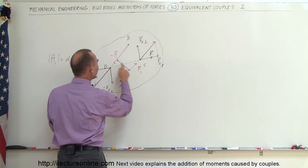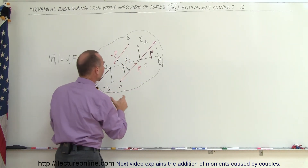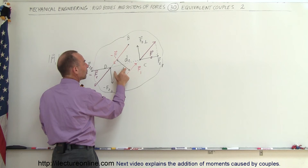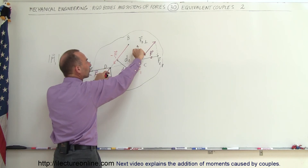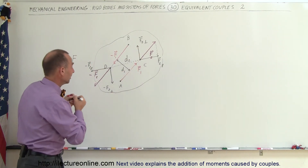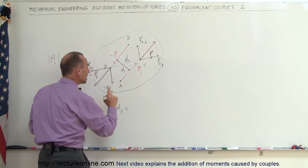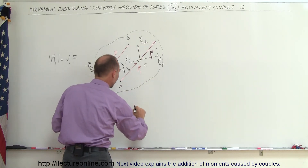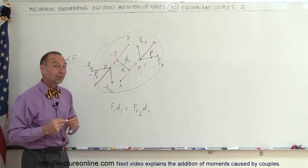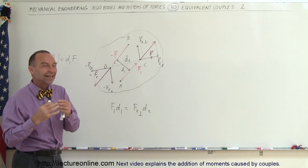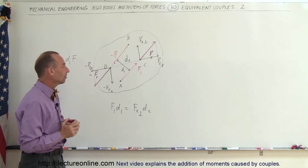Also notice that the distance between those two points is now larger — this is the distance d2. It turns out that the amount by which d1 grew to d2 is compensated for by the fact that the magnitude of the perpendicular components are now smaller, in such a way — and this is the key — that F1 times d1 is going to equal the perpendicular component F2-perpendicular times d2. Therefore we can say that these are equivalent couples, causing the exact same moment.